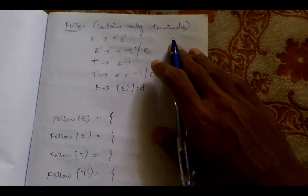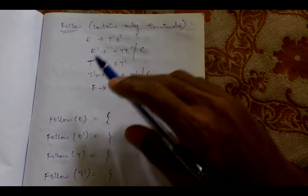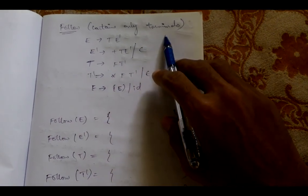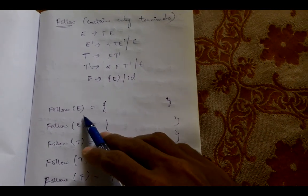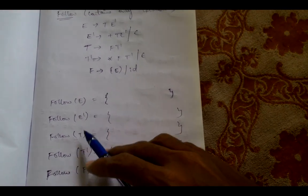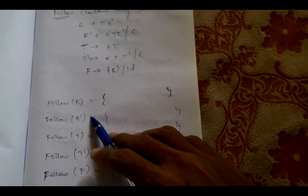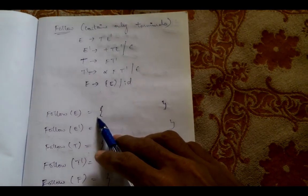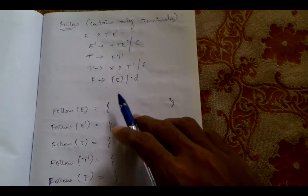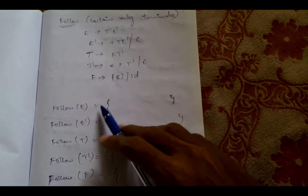The follow set contains only terminals, as we have seen for the first set as well. Follow is calculated for the non-terminals, so for all these non-terminals we need to find the follow set. One good practice is that before finding the follow set, we need to first calculate the first set for all these non-terminals.